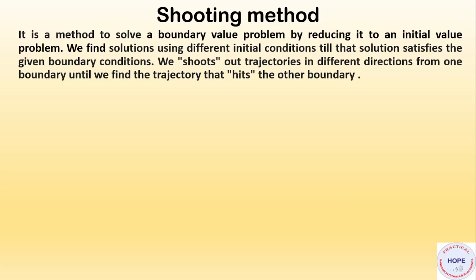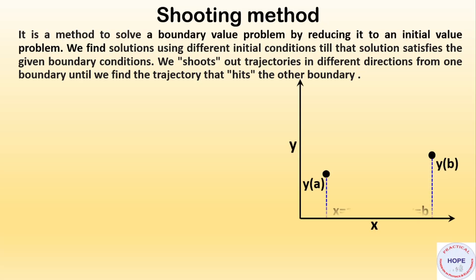We shoot out trajectories in different directions from one boundary until we find the trajectory that reaches the other boundary. Say these are the two boundaries from x equal to a to b, and y(a) and y(b) are the two corresponding values of y. We start with some initial slope y1' and solve the differential equation, then y1(b) is the final value of y at x equal to b.